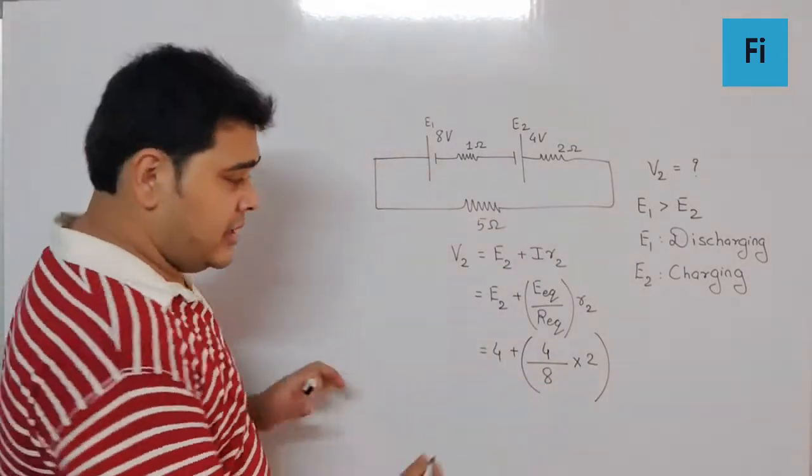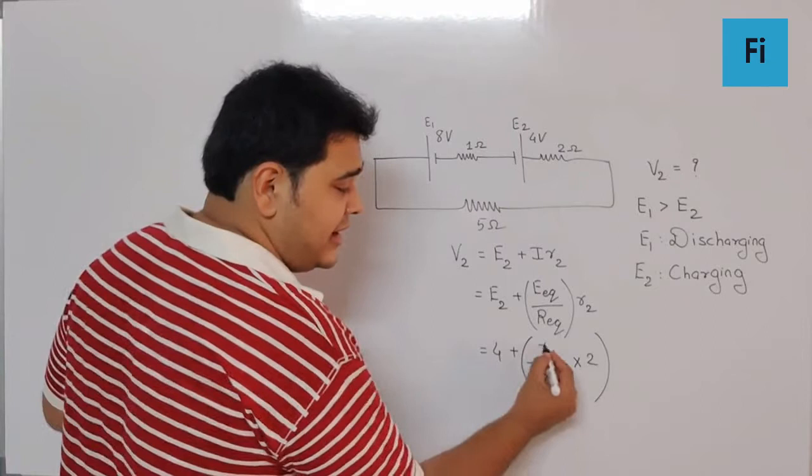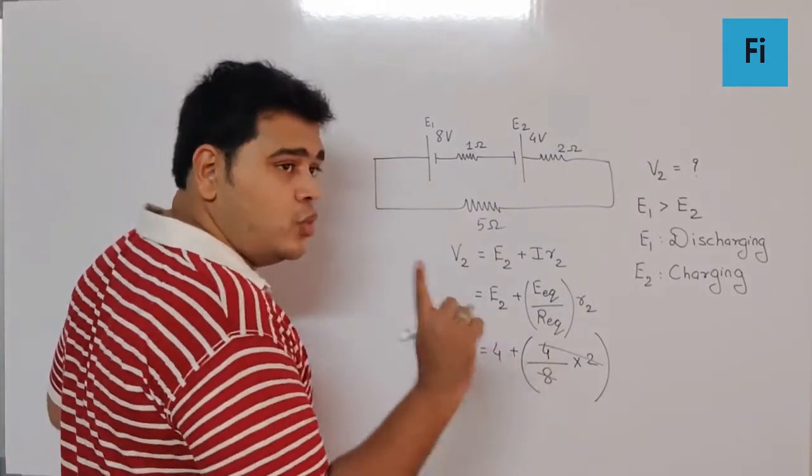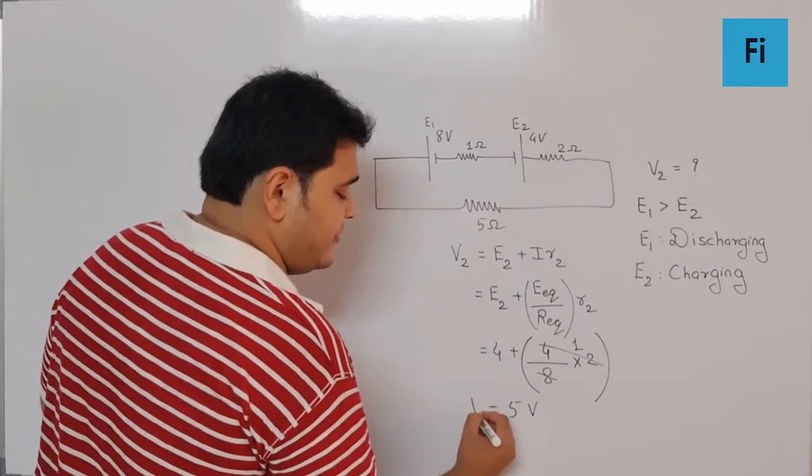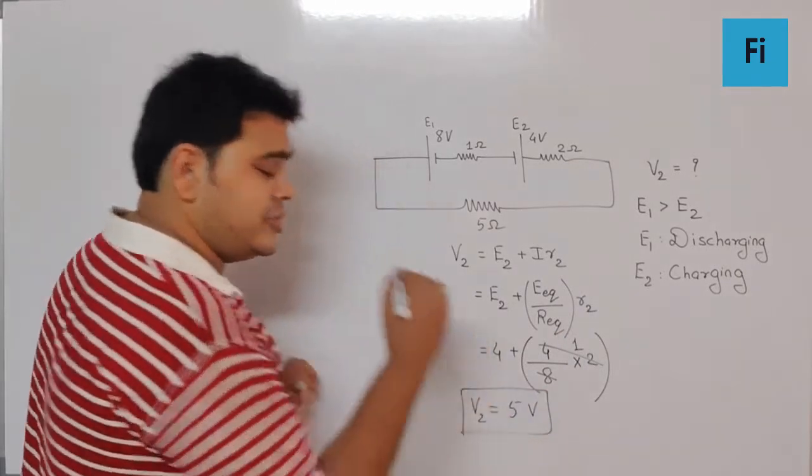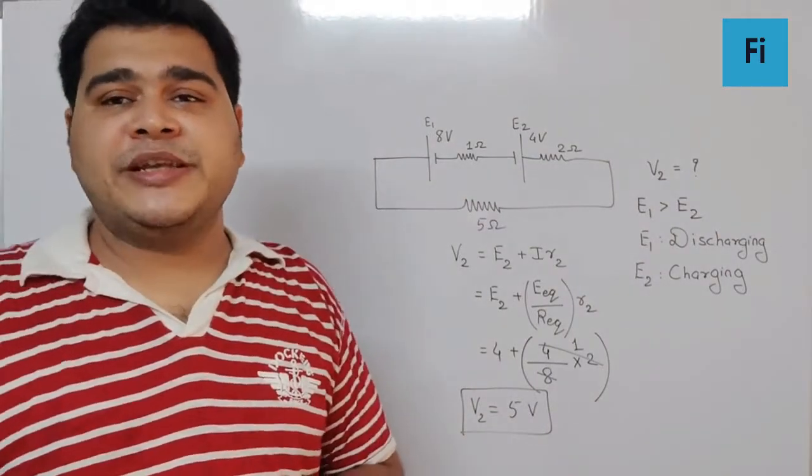So now I can say 4 into 2, 8, 8 and 8 cancels, we are left with 1. So 4 plus 1, the answer is going to be 5 volt as the terminal potential difference across E2.